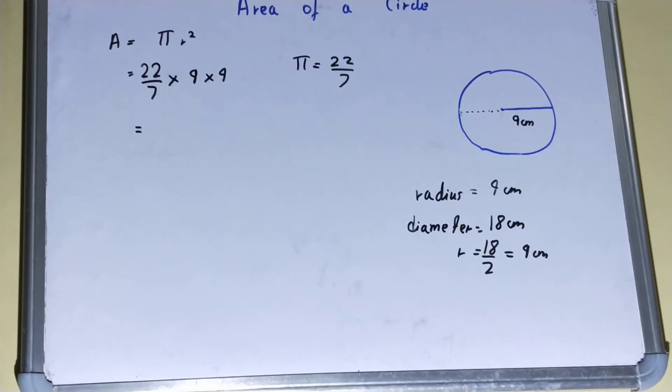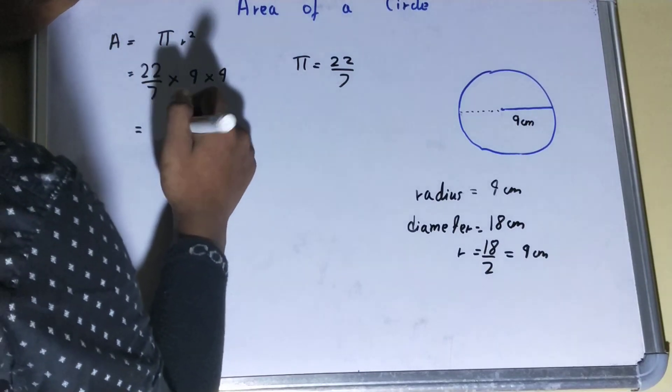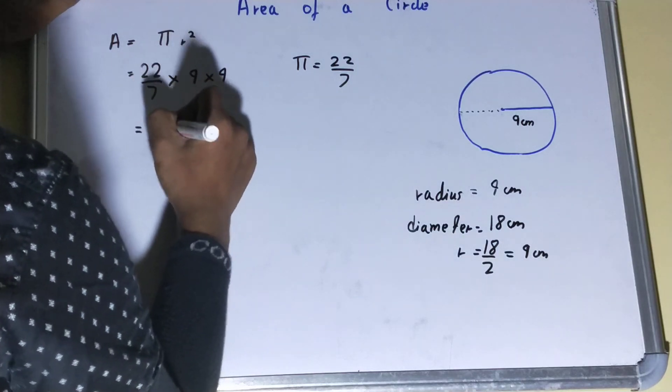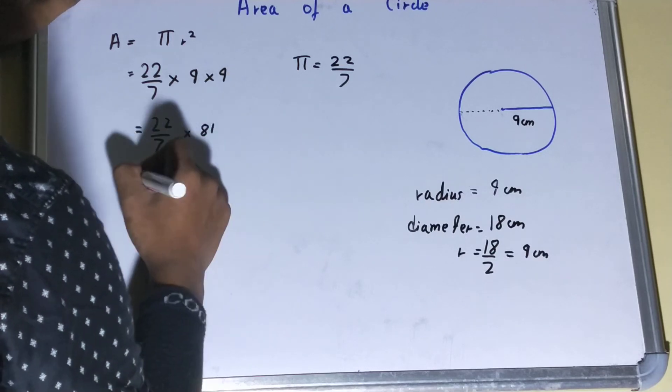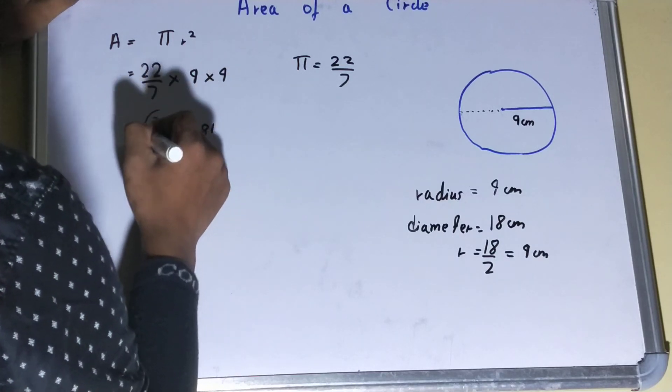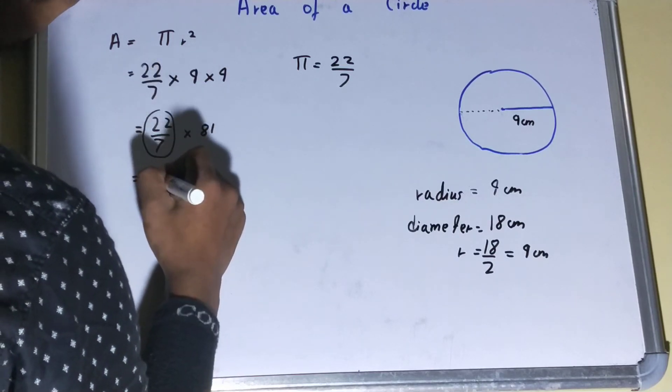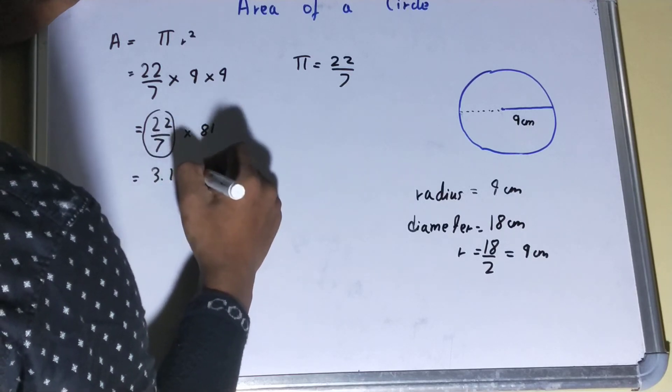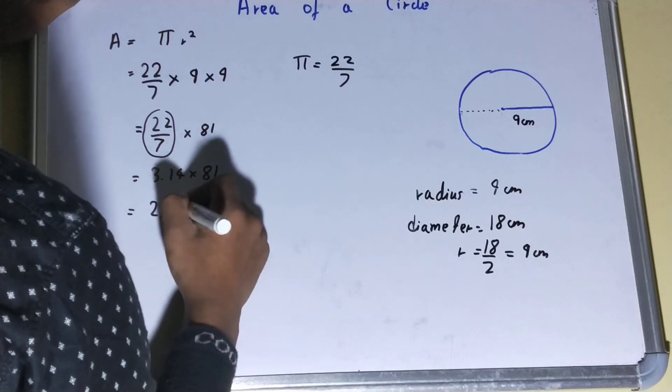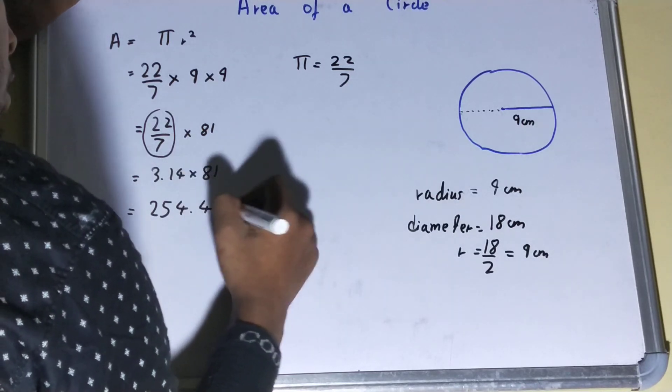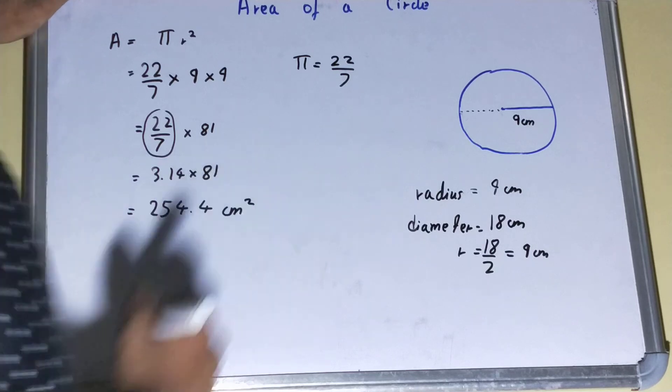After multiplying, we can simplify it. That is 22 by 7 into 81. This can be further written as 3.14 into 81, which equals 254.4 centimeters square, because this is the area of the circle.